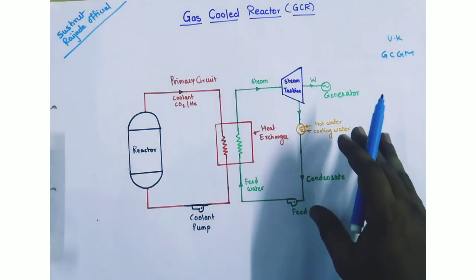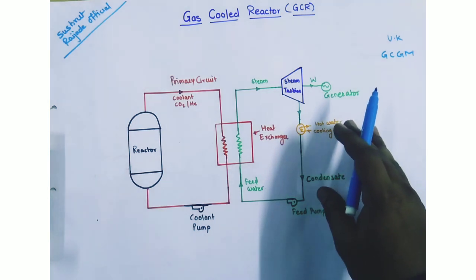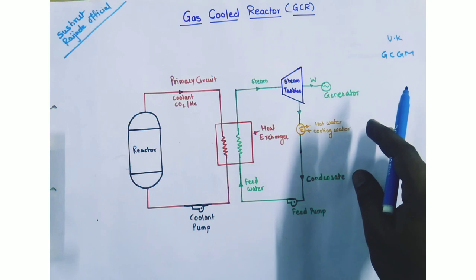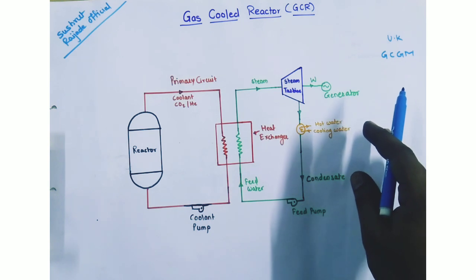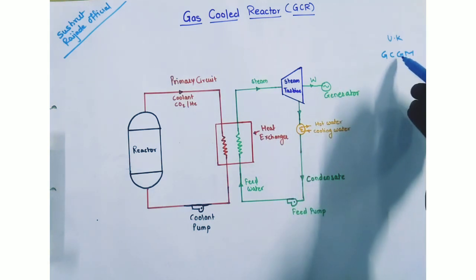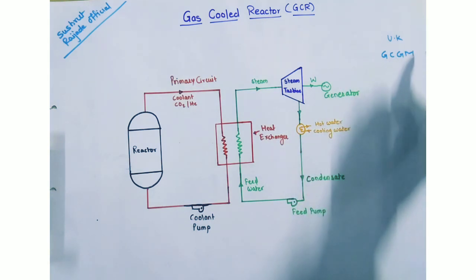It is also called a gas cooled graphite moderated reactor, that is GCGM — gas cooled graphite moderated reactor.